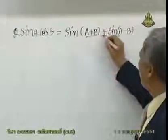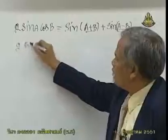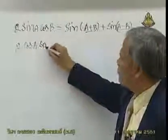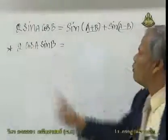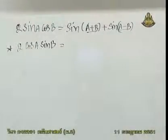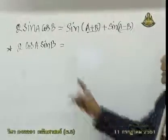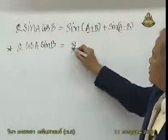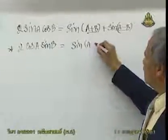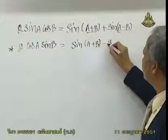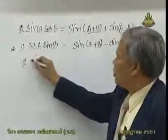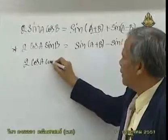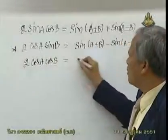sin(a+b) บวกกัน แล้วก็ sin(a-b). 2 cos a sin b บ้าง. ถ้าจำอันนี้ไม่ได้ก็ไม่เป็นไร เพราะว่ามุมมันออกมาเองนะ. อันนี้จุดสำคัญก็คือ ถ้าเป็น cos a เนี่ย หมายความว่า มุม a นี่มากกว่ามุม b ก็กลายเป็น sin(a+b) ลบ sin(a-b). ส่วน 2 cos a cos b มันจะเป็น cos(a+b) บวก cos(a-b).